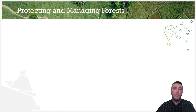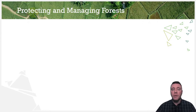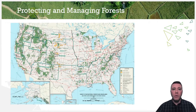Perhaps one of the easiest and most effective ways of conserving forests is to establish protected areas. 12.4% of the world's forests and 8.5% of forest land in the U.S. is protected by laws and regulations. The area of protected forest in the U.S. is equivalent to the size of Texas.